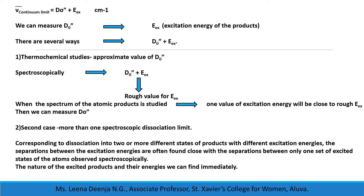The second case is for more than one spectroscopic dissociation limit. Corresponding to dissociation into two or more different states of products with different excitation energies, the separations between the excitation energies are often found to be close to the separations between only one set of excited states of atoms observed spectroscopically, allowing us to find the nature of the excited products and their energies immediately.